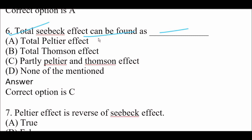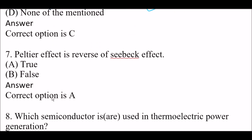Next question: total Seebeck effect can be found as — Option A: total Peltier effect. Option C: partly Peltier and Thompson effect. Option D: none of the mentioned. Right answer is Option C — partly Peltier and partly Thompson effect. Next question: Peltier effect is the reverse of Seebeck effect — true or false. Answer: true.